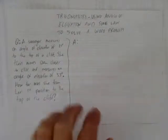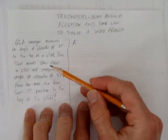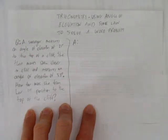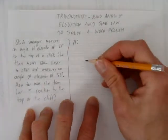There's a surveyor who measures an angle of elevation of 21 degrees to the top of a cliff. She then moves 120 meters closer and measures an angle of elevation of 33 degrees. How far was she from her first position to the top of the cliff? Let's draw a diagram.